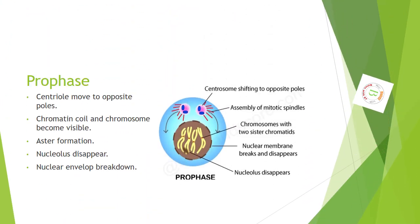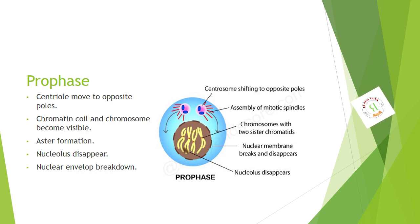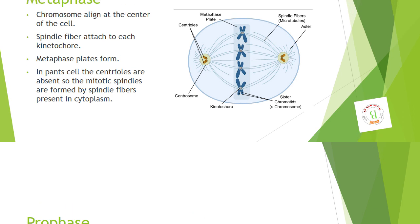Prophase. Centrioles move to opposite poles. Chromatin coils and chromosomes become visible. Aster formation occurs. Nucleolus disappears and the nuclear envelope breaks down.